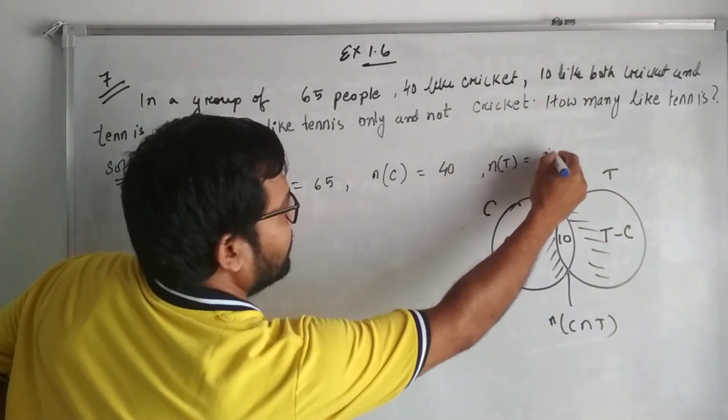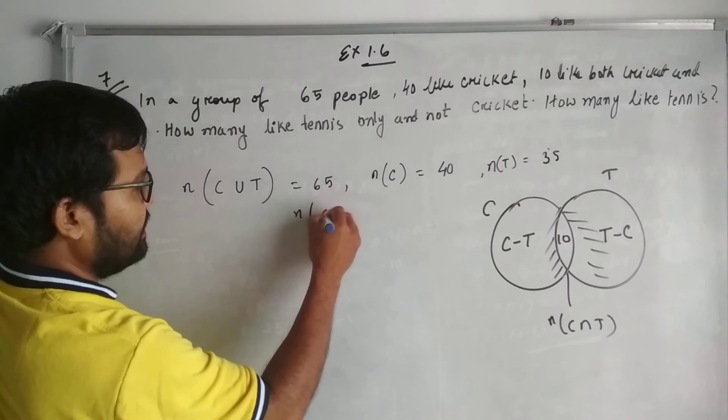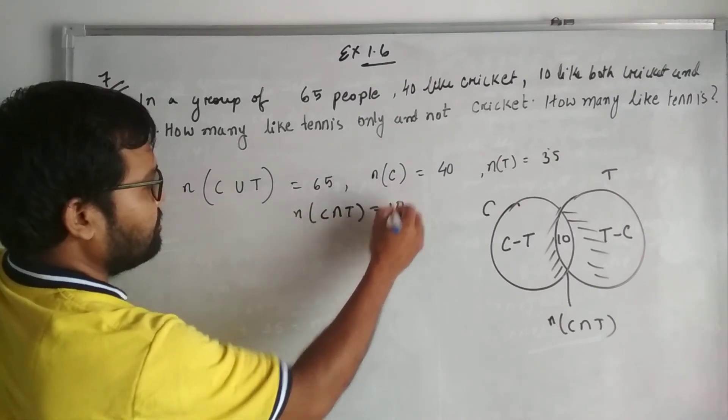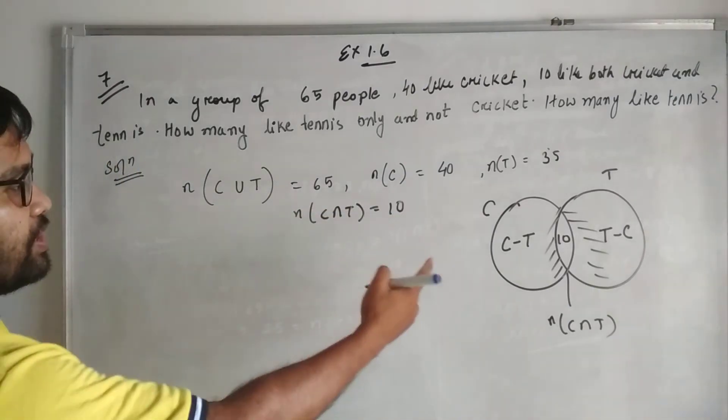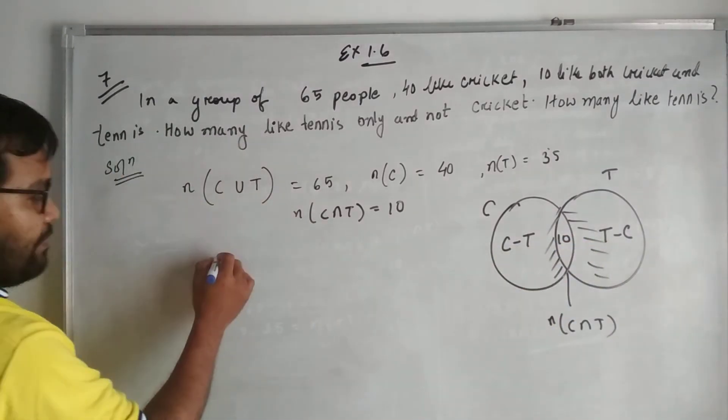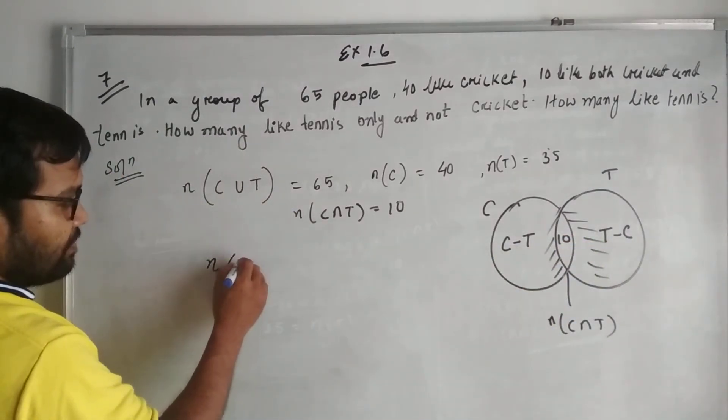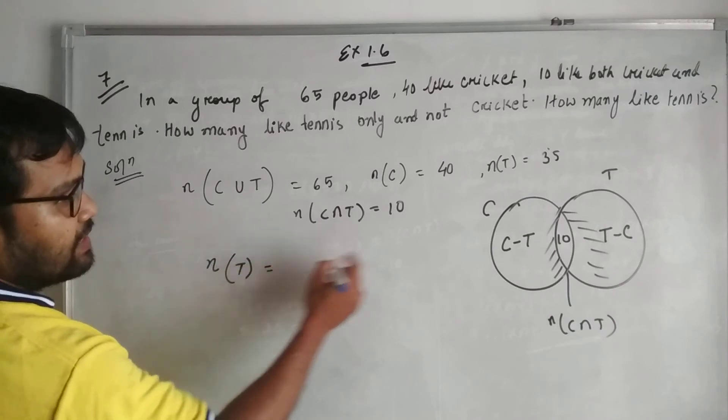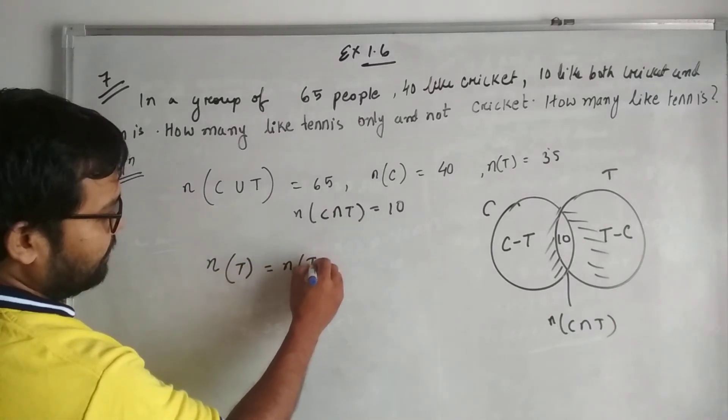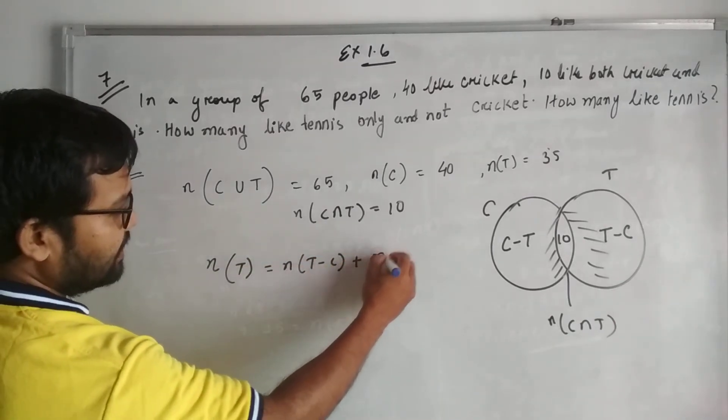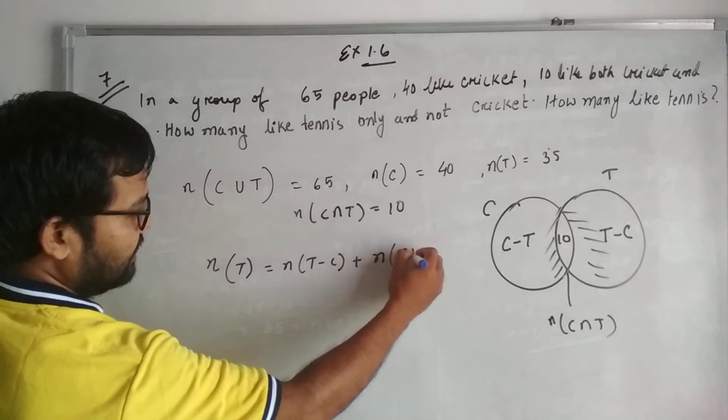That is, this is 35 we got. And n(C∩T) we have as 10. Now if you observe, what we require? We require T minus C. Where do you get T minus C from? n(T) is nothing but n(T-C) + n(C∩T).